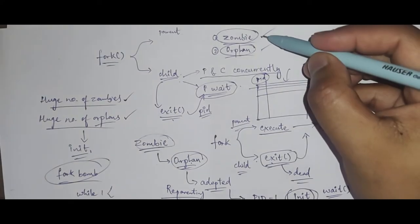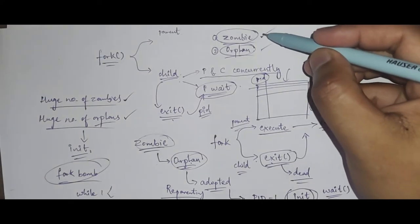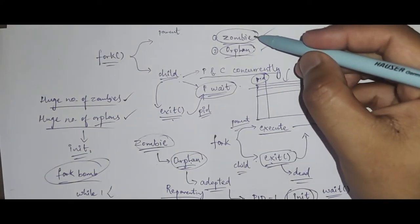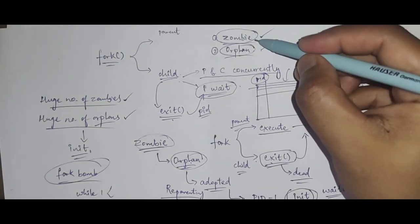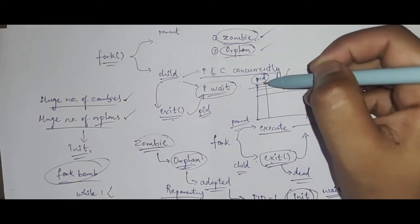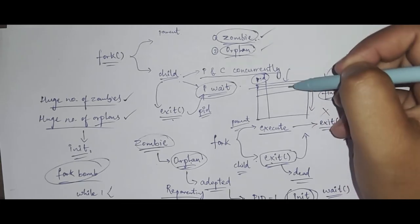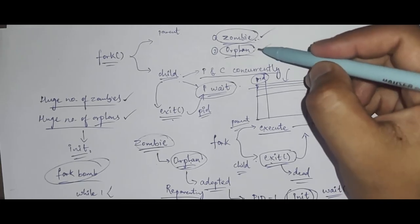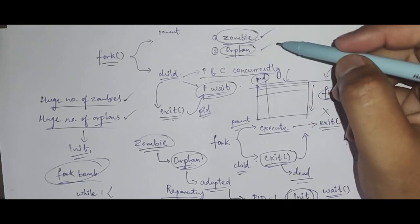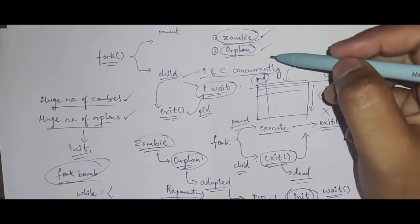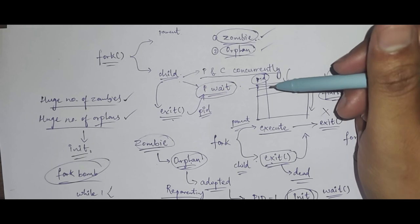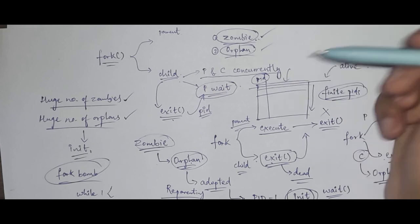To summarize: zombie processes are processes that have died by calling exit but are still alive in the process table because their entry hasn't been removed. Orphan processes are those whose parent processes have terminated.